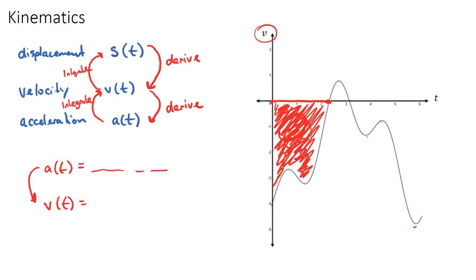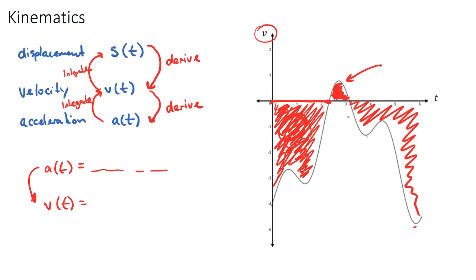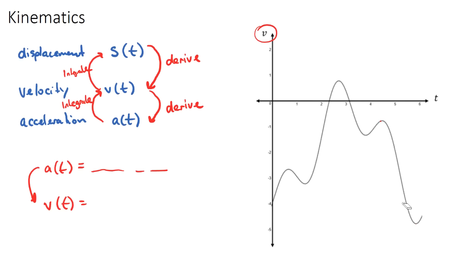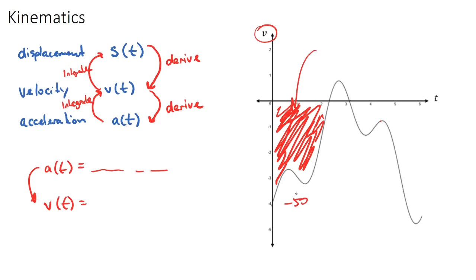When integrating the region where velocity is negative, we get a negative area, which makes sense because the object was traveling backwards. The total distance for that segment is the magnitude of that negative value — for example, if integration gives negative 50, we still traveled 50 meters. We then add the distance traveled forwards in the positive region, and add the magnitude of any further negative regions.